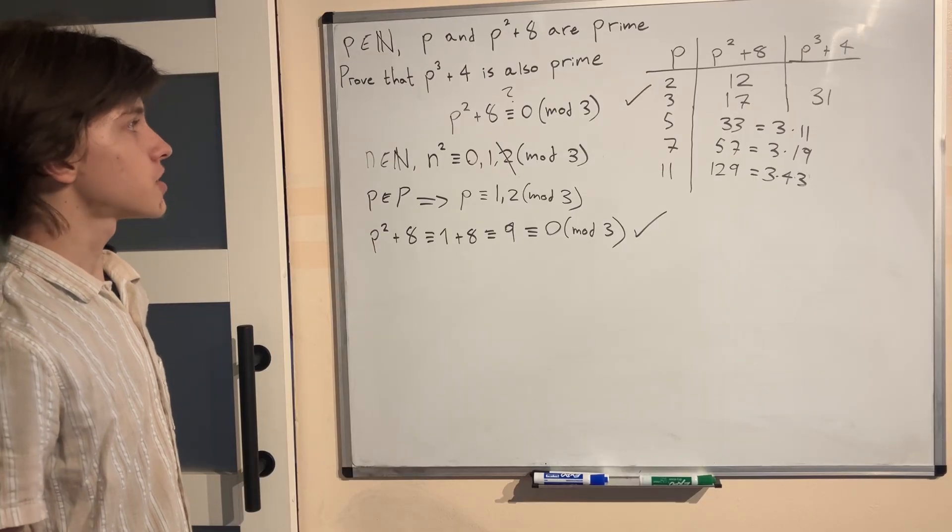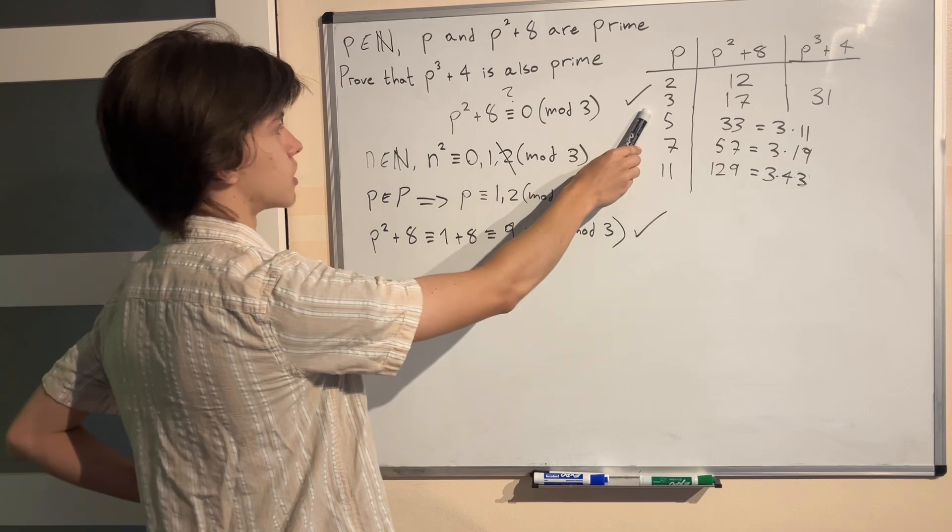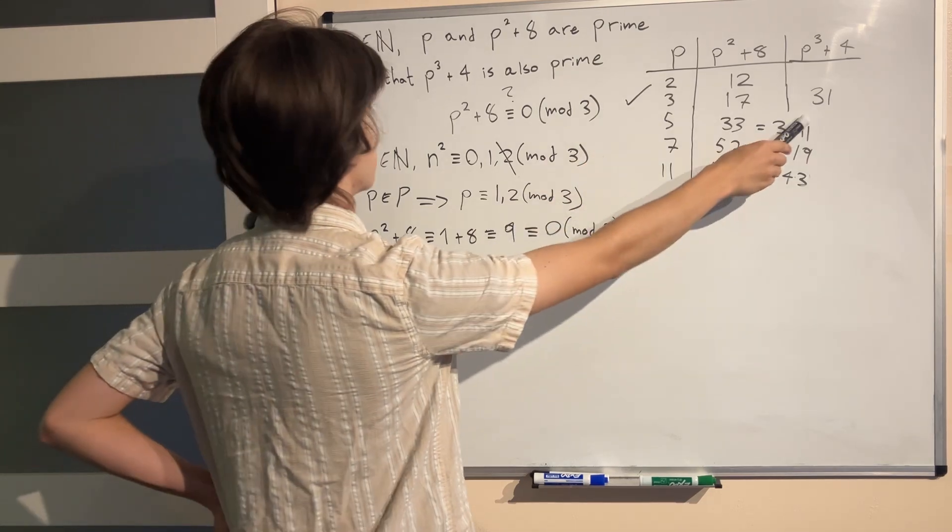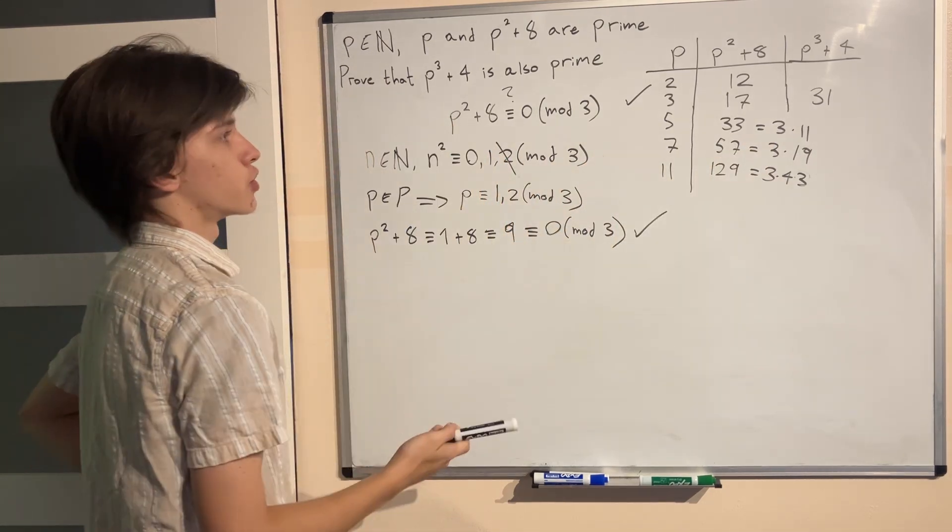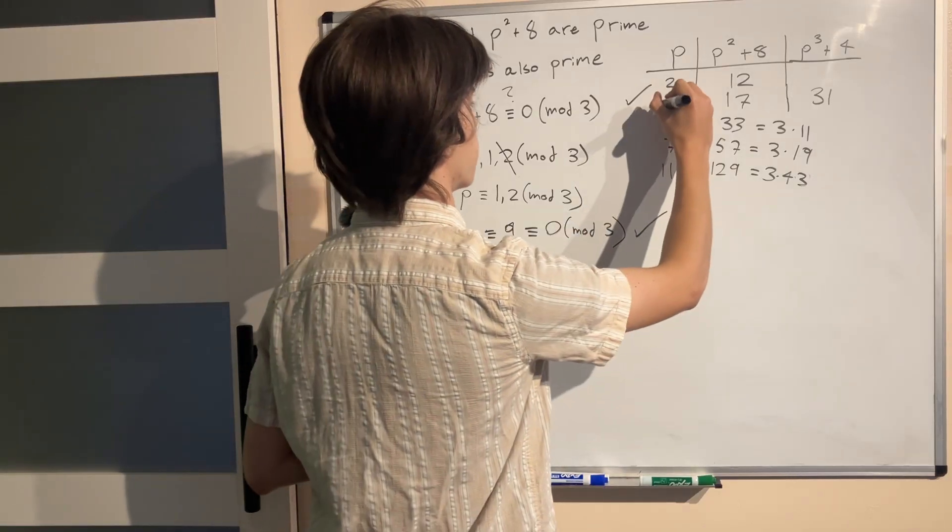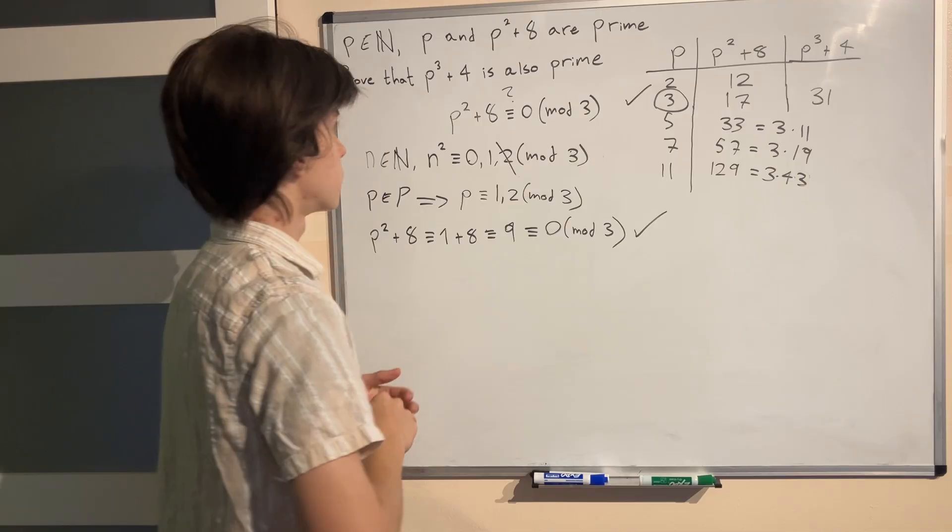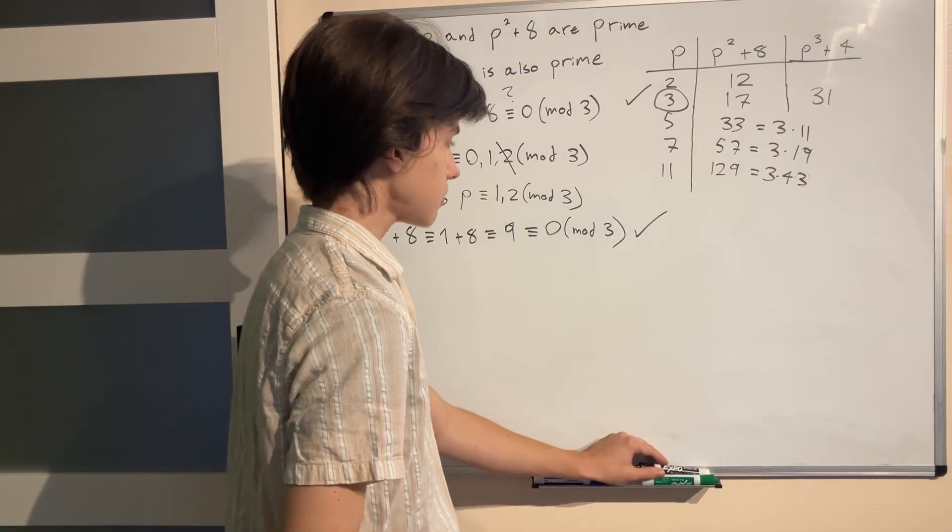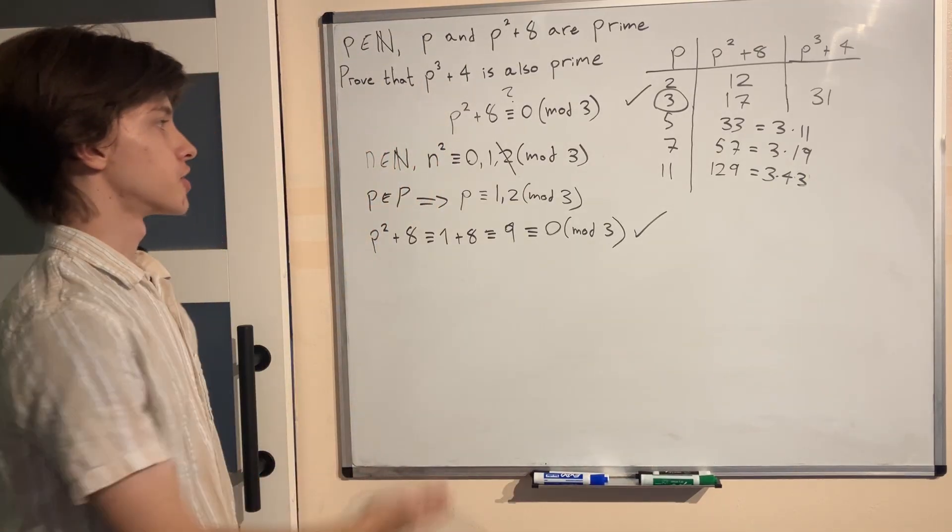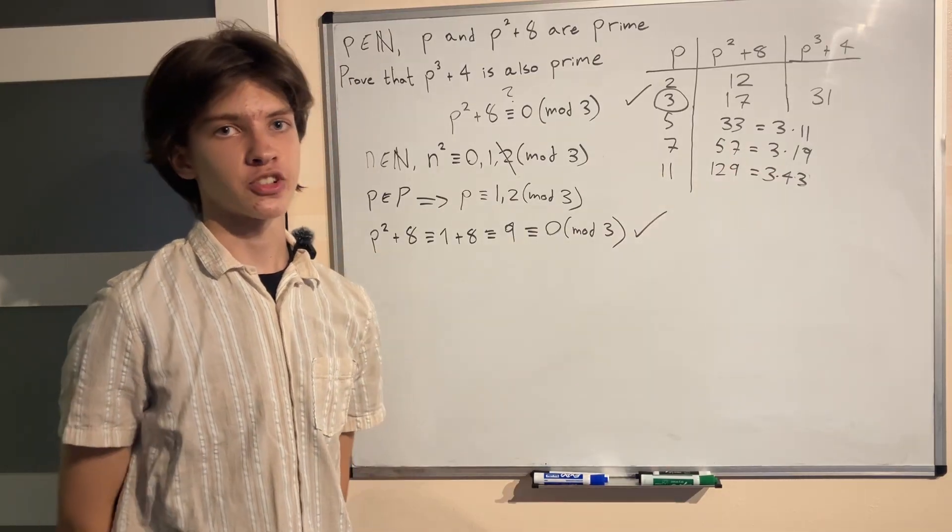And so the only case when p and p² + 8 are both prime is when p equals 3. And therefore p³ + 4 is also going to be prime as shown here in the case of p equals 3. And we are done with this pretty fun question which lets you think about some squares in mod 3 and noticing quite some interesting pattern right here.